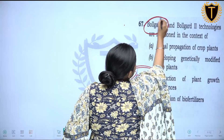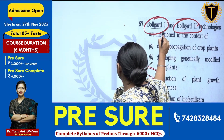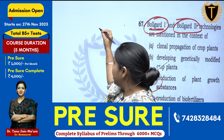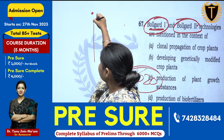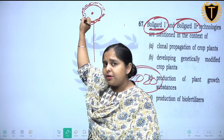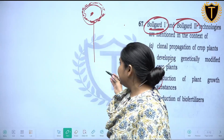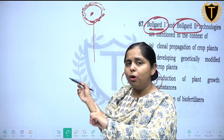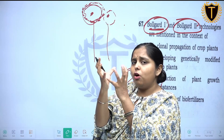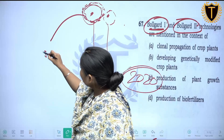The question is about Bollguard 1 and Bollguard 2. We will try to break this word and figure out where we have come across it. In the cotton crop, the seed is amidst a chunk of cotton fibers, and this structure, as given in our NCERT 6th standard, is known as a boll.